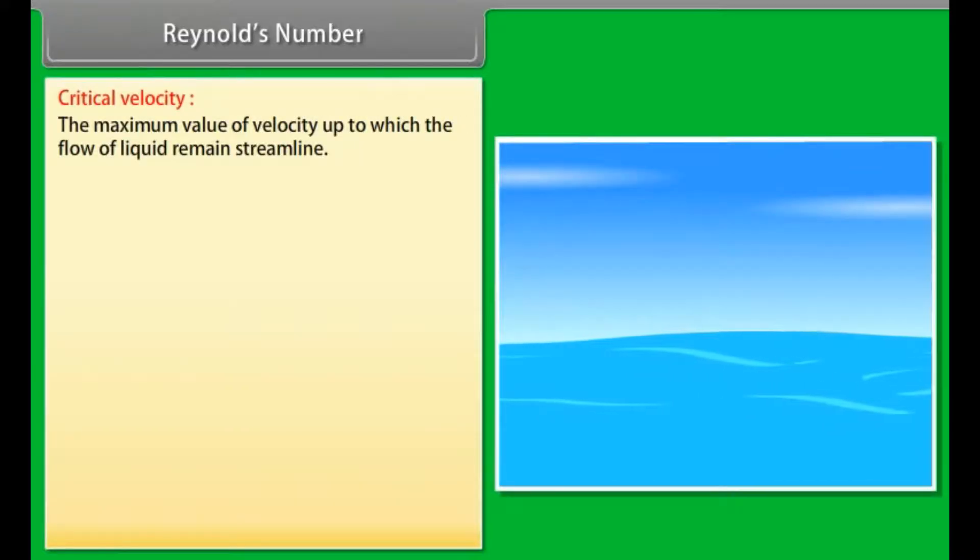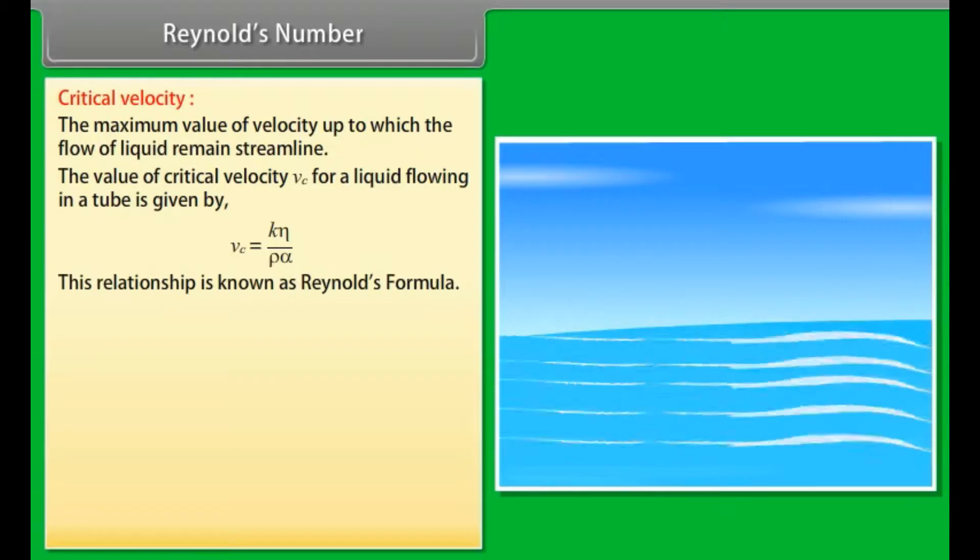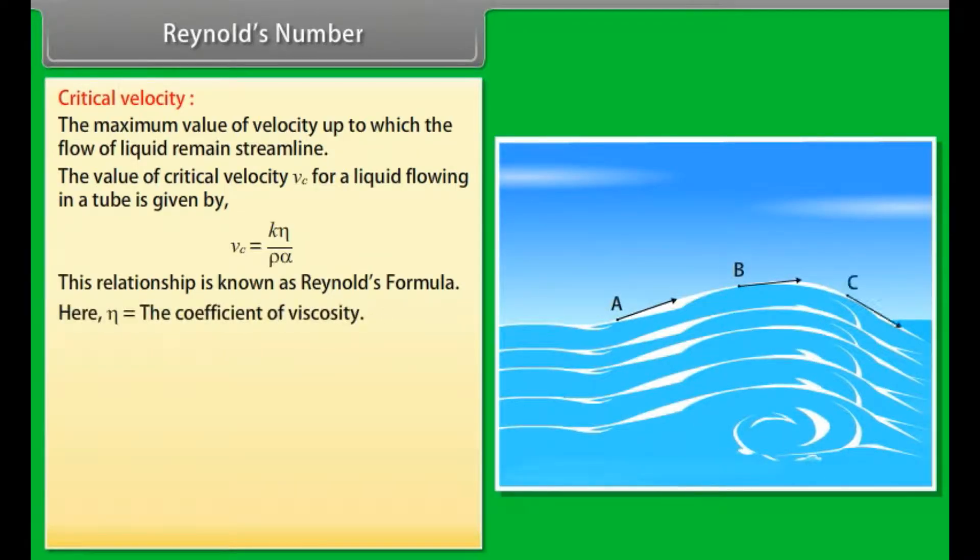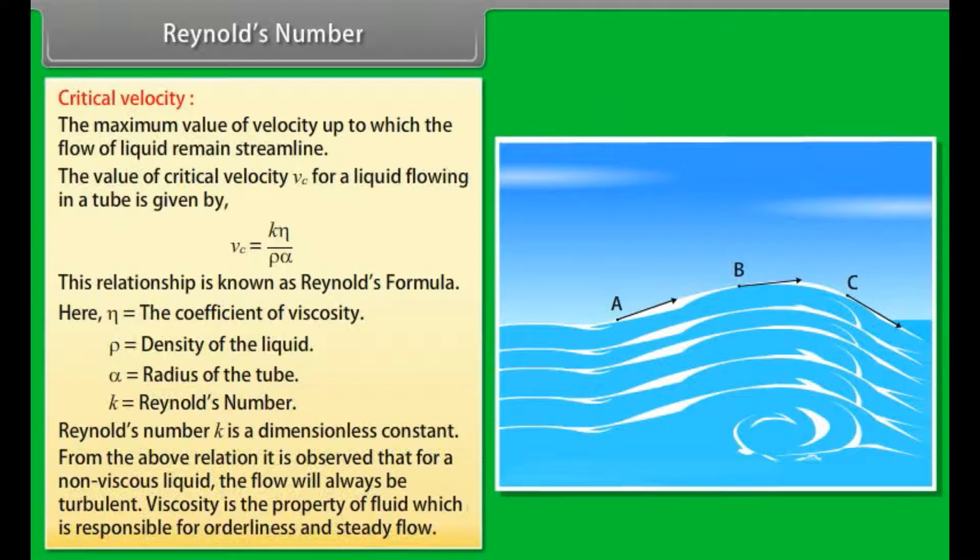Reynolds number. Critical velocity is the maximum value of velocity up to which the flow of liquid remains streamlined. The value of critical velocity vc for a liquid flowing in a tube is equal to K × η/(ρ × α). This relationship is known as Reynolds formula. Here η is the coefficient of viscosity, ρ is density of the liquid, α is the radius of the tube, and K is the Reynolds number. Reynolds number K is a dimensionless constant. From the above relation, it is observed that for a non-viscous liquid the flow will always be turbulent. Viscosity is the property of fluid which is responsible for orderliness and steady flow.